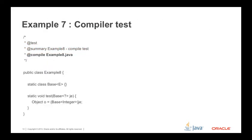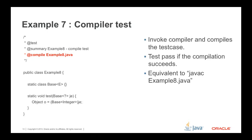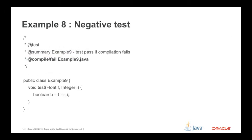Compiler Test: '@compile example8.java' means JTREG will compile the test case, and if the compilation succeeds, the test is considered passed. This is equivalent to invoking 'javac example8.java'.